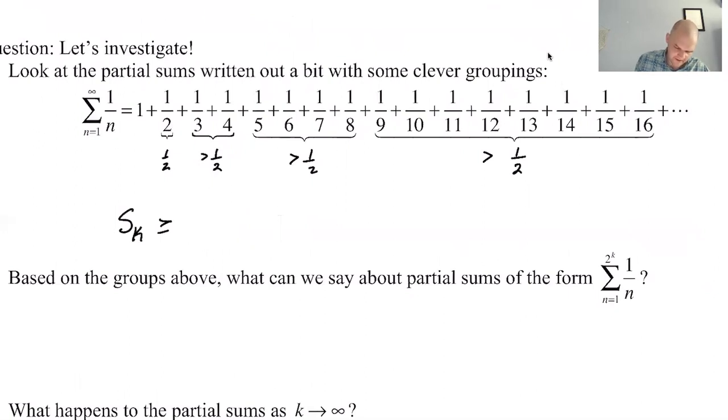So when K is equal to zero, we just got one, right? If K is equal to one, we're doing the sum from one to one, so we get both of those. And then when K is equal to two, we get the first four terms. When K is equal to three, we get all of these. So in general, I think the sum is greater than or equal to one plus one half K.